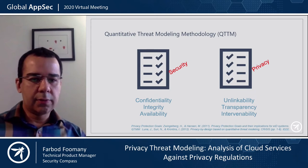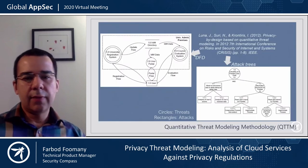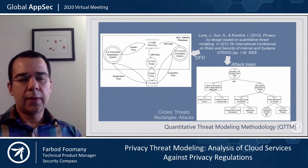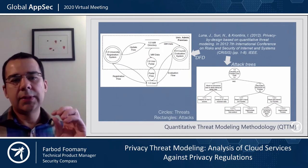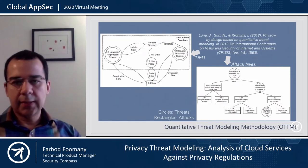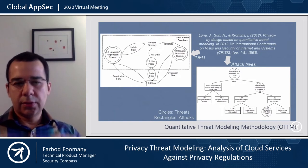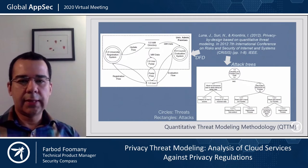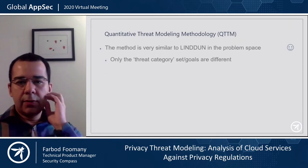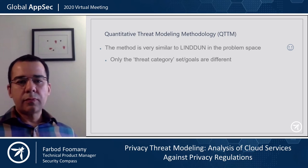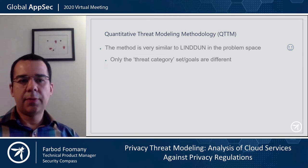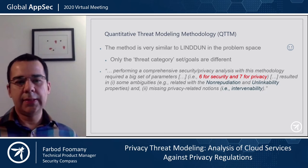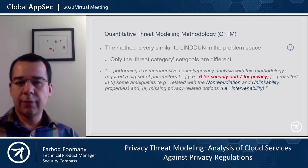What are the privacy goals that QTTM uses? In the security space, the goals are CIA. In the privacy space, they borrowed the privacy goals from a 2011 privacy protection goals paper — an IETF paper — and published their work at an IETF conference. This is the data flow diagram — same flow as LINDDUN. You get each element of the data flow diagram and create attack trees. They use attack trees as opposed to threat trees — circles show threats and rectangles show attacks.